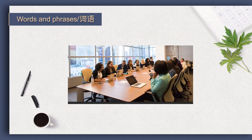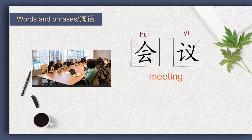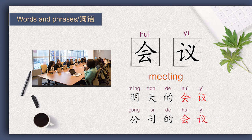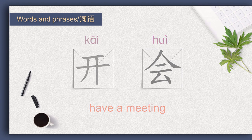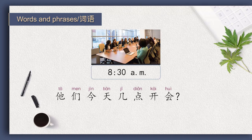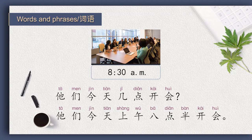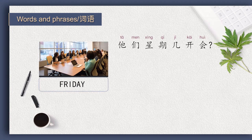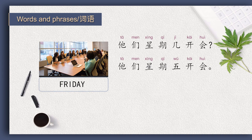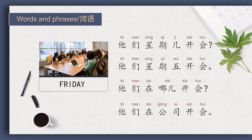In Lesson 7, we learned that 'meeting' as a noun in Chinese is 会议. We can say 明天的会议 or 公司的会议. However, 'to hold a meeting' in Chinese is 开会. For example: 他们今天几点开会? 他们今天上午八点半开会。 他们星期几开会? 他们星期五开会。 他们在哪儿开会? 他们在公司开会。